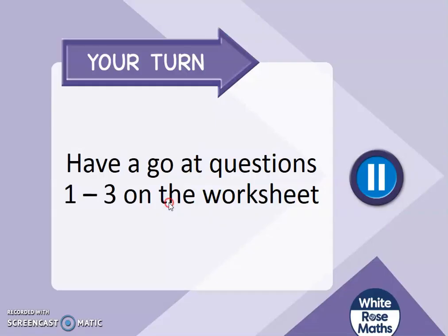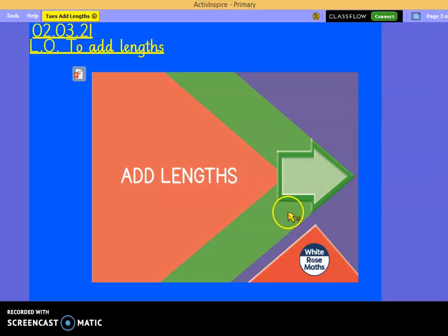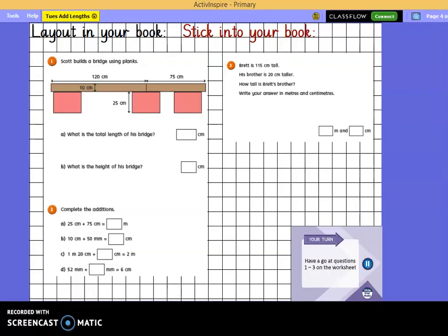I'd like you to pause here and have a go at questions 1 to 3 on the worksheet. Here is how I'd like you to record that in your book. You're going to be sticking it in your book today and recording it directly on here using space to work it out. Here you're finding the length, how long it is and here you're finding the height. This bit and this bit to find the height. Then you're going to have questions like we've just practised and a question to try out. When you've finished number 3, come back to me and we'll go on.